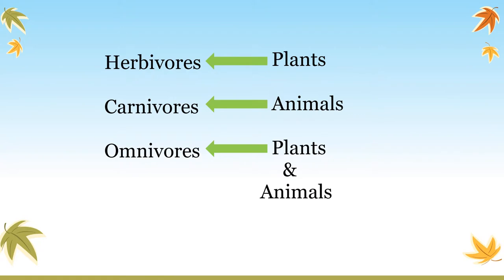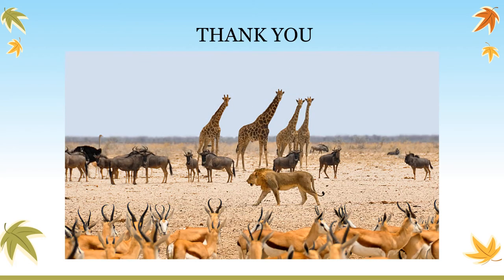Let us now quickly revise what we have learned. Based on food habits, animals are divided into three groups: herbivores, carnivores, and omnivores. Those animals which depend on other animals for food are called carnivores. Those which depend on both plants and animals for food are called omnivores. Those which depend only on plants are called herbivores. Thank you children, hope you understood the concept well.